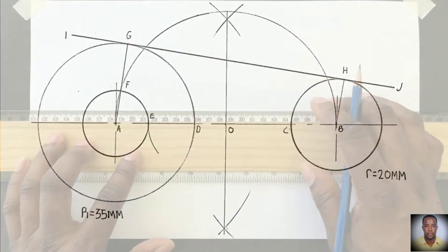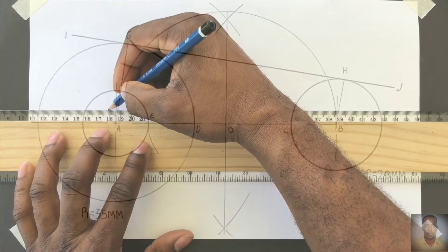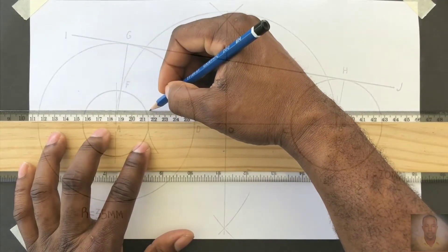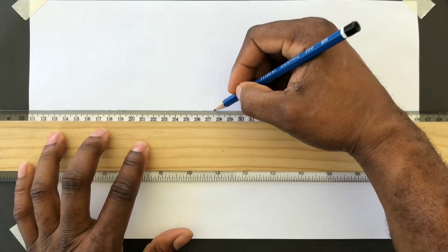We will first draw a horizontal center line using our T-square. Center line consists of long and short alternating dashes.